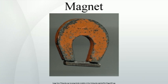The term magnet is typically reserved for objects that produce their own persistent magnetic field even in the absence of an applied magnetic field. Only certain classes of materials can do this. Most materials, however, produce a magnetic field in response to an applied magnetic field — a phenomenon known as magnetism. There are several types of magnetism, and all materials exhibit at least one of them. The overall magnetic behavior of a material can vary widely, depending on the structure of the material, particularly on its electron configuration.